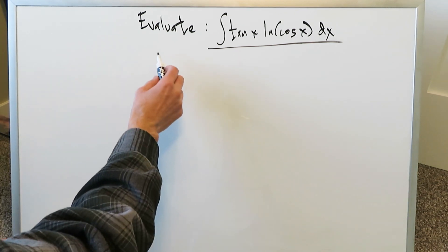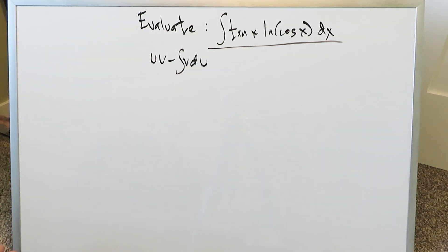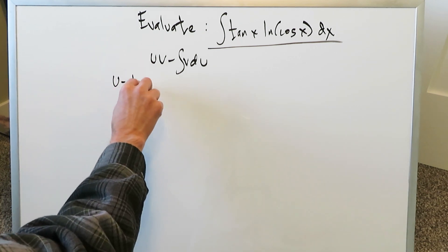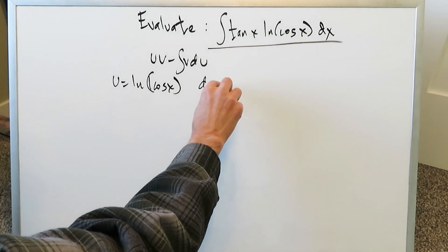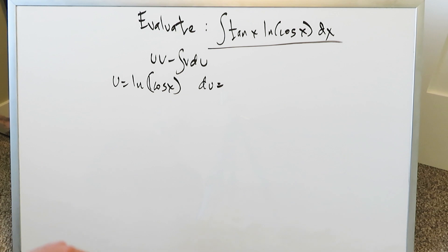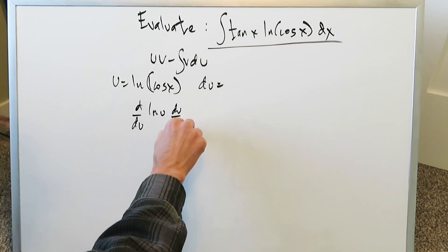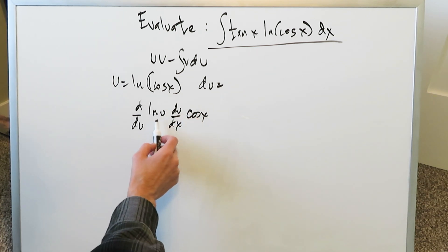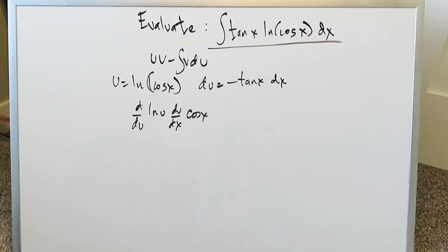A good way to handle this is integrating by parts: uv minus integral of v du. If u equals natural log of cosine(x), we can use circular parentheses. Then du is the derivative of that — it's a composite chain rule. You do d/du of ln(u), then du/dx of cosine(x). When you do this, you get minus sine(x) divided by cosine(x), giving minus tan(x) dx.